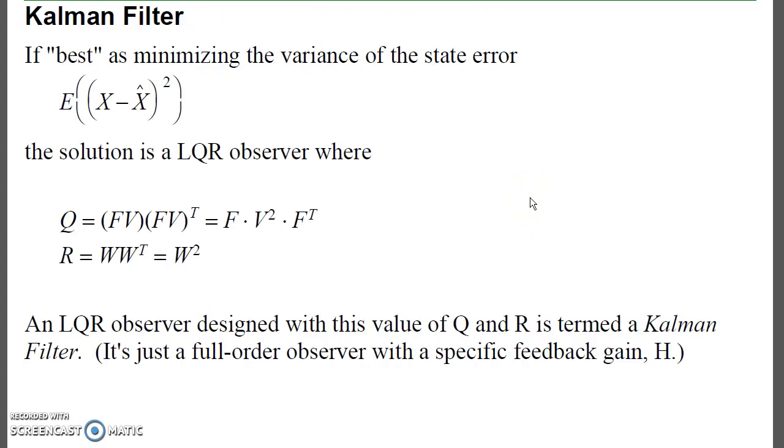If I use that very specific Q and R, I'll wind up with an optimal observer called a Kalman filter. Essentially, Kalman filter is just a highfalutin word for a full-order observer with a very specific Q and R.